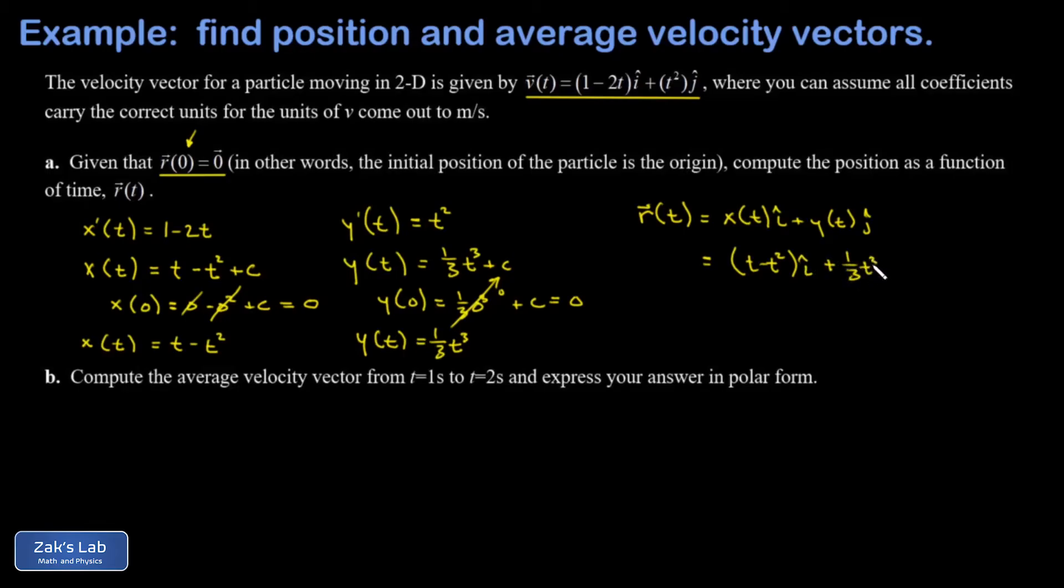In part b we're asked to compute the average velocity vector from t equals one second to t equals two seconds. And so the starting point here is to remember that the average velocity is given by a change in the position vector divided by the change in time.